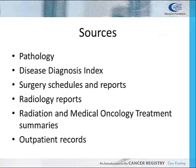Various sources are used for case finding, but the two most important case finding sources are pathology reports and the disease diagnosis index. Pathology reports include surgical pathology, biopsy, cytology, bone marrow, and autopsies. The computerized disease diagnosis index is based off of all patients' coded encounters completed by coders. By utilizing the disease diagnosis index, the cancer registrar can determine if cases were missed from the other sources.